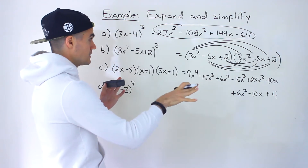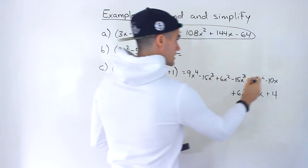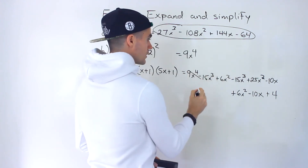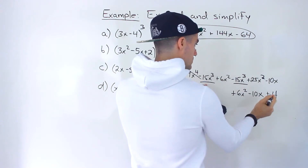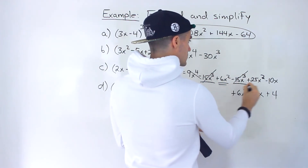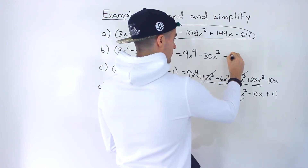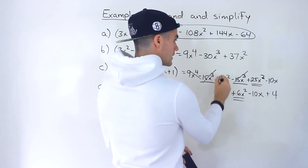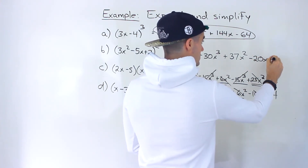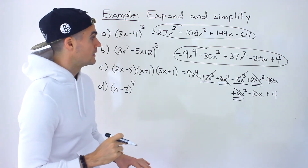That's the expanded answer. Now we simplify the like terms. 9x to the 4 is by itself. Then minus 15x cubed minus 15x cubed gives minus 30x cubed. Then 6x squared plus 25x squared gives positive 37x squared. Then negative 10x minus 10x gives negative 20x. And then we've got positive 4. There are no more like terms remaining, so that ends up being the final expanded answer.